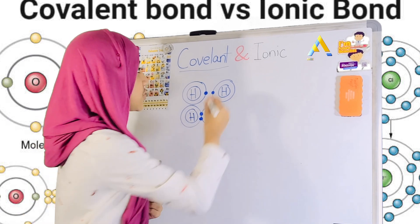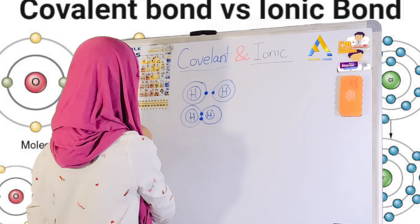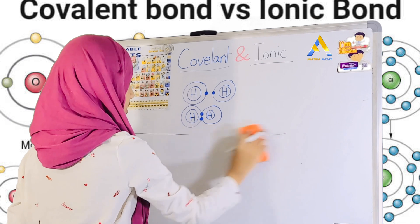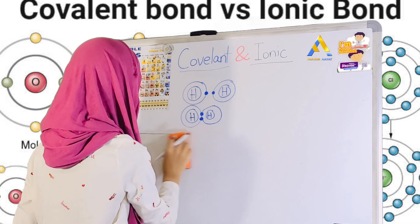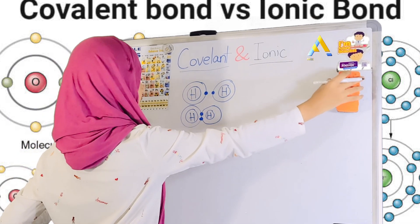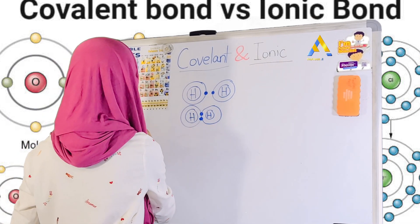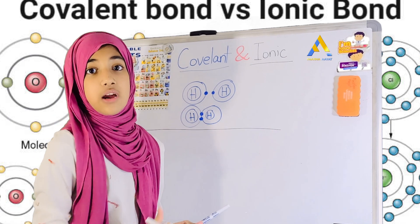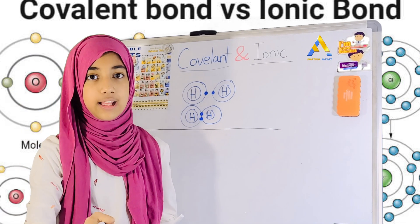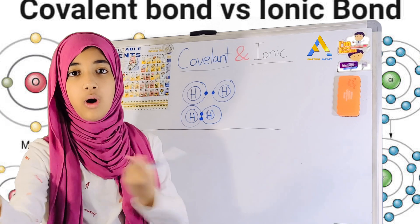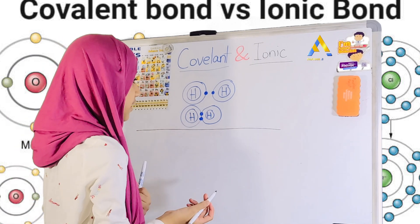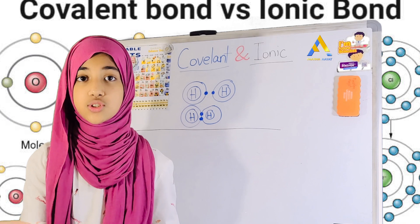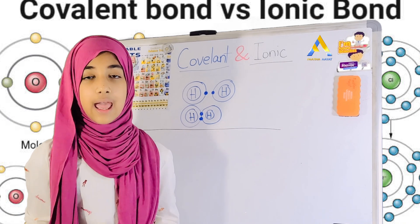Now that I have to do ionic bonds, I'm going to draw it underneath so that we can tell the difference between the covalent bonds and ionic bonds. Ionic bonds are basically, instead of sharing, they're giving or taking the electrons from one another, right? We're going to take the examples of sodium and chlorine.